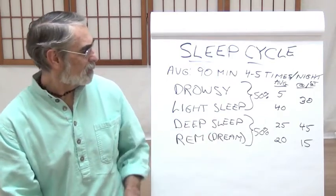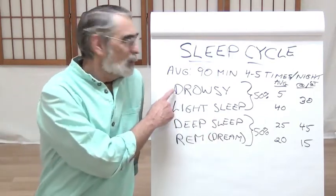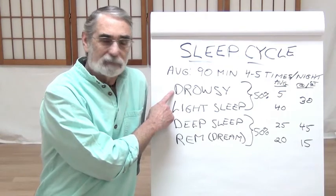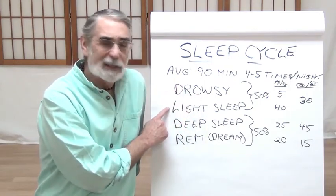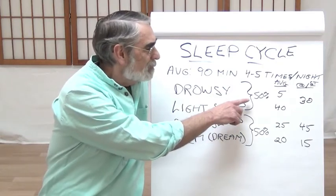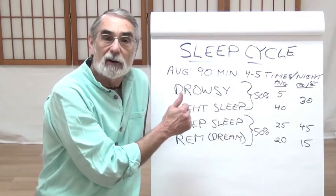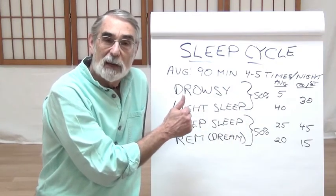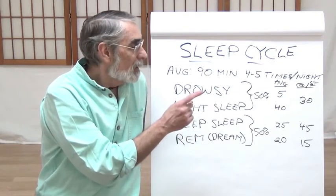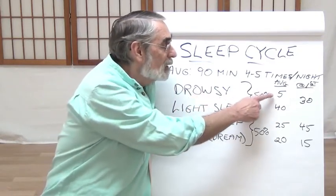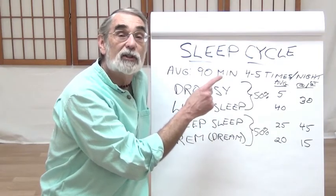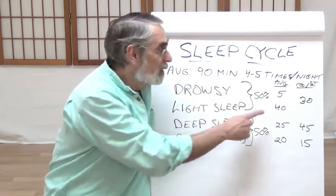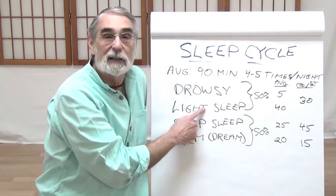The cycle, as I've got up here, begins with the drowsy state. From drowsy we move to light sleep, and together this is about 50% of the time we spend in sleep, averaging approximately five minutes in the drowsy state per cycle throughout the night, 40 minutes in light sleep.